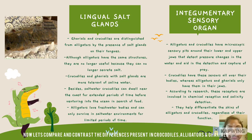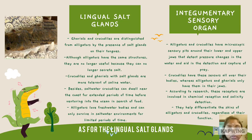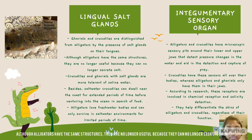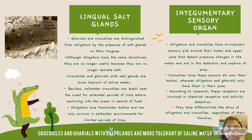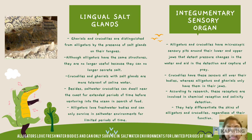Now let's compare the differences in lingual salt glands between crocodiles, alligators and gharials. Gharials and crocodiles are distinguished from alligators by the presence of salt glands on their tongues. Although alligators have the same structures, they are no longer functional and can no longer secrete salt. Crocodiles and gharials with salt glands are more tolerant of saline water. Saltwater crocodiles can dwell near the coast for extended periods before venturing into the ocean. Alligators prefer freshwater and can only survive in saltwater environments for limited periods.